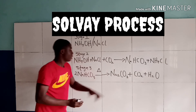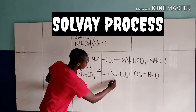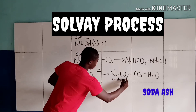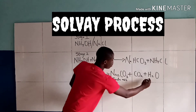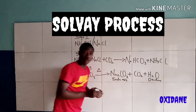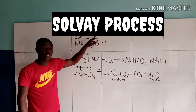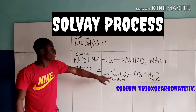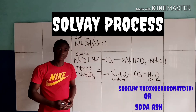Please take notes. Sodium carbonate is also called soda ash, and water is also called oxidane. So the product of the Solvay process is sodium carbonate, also called soda ash.